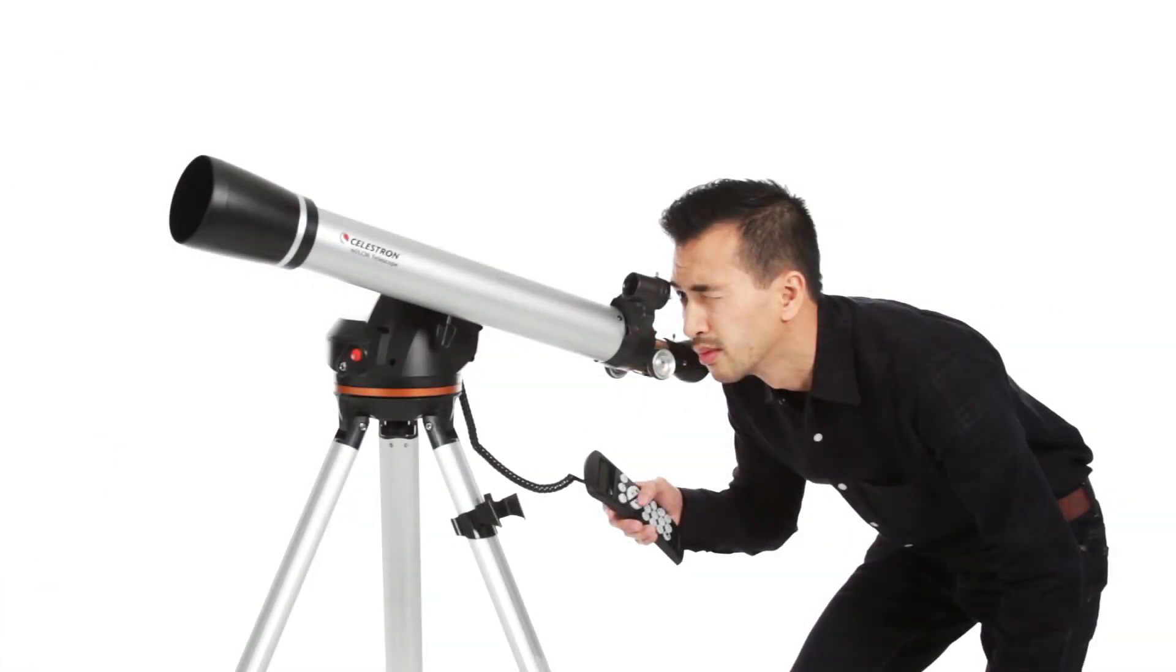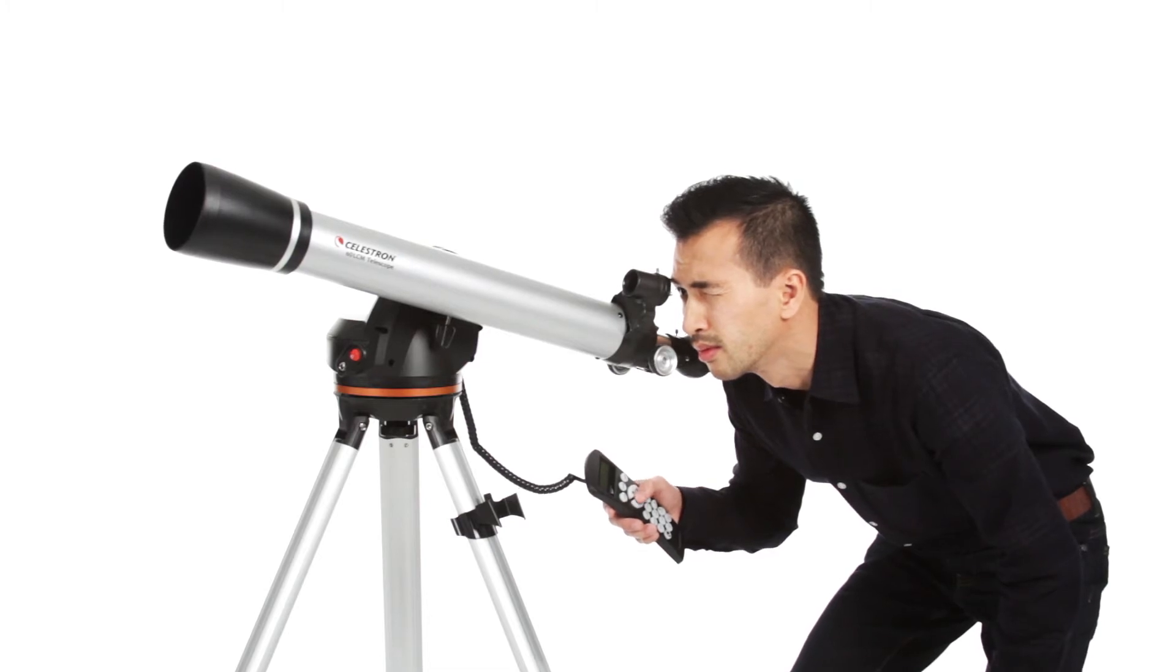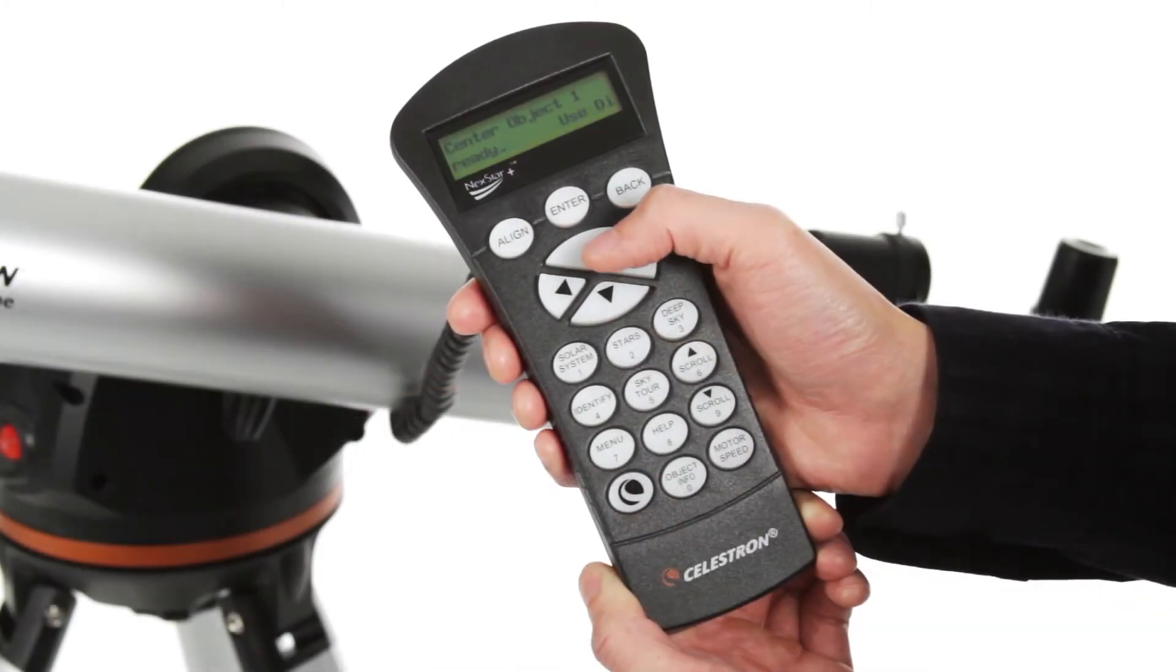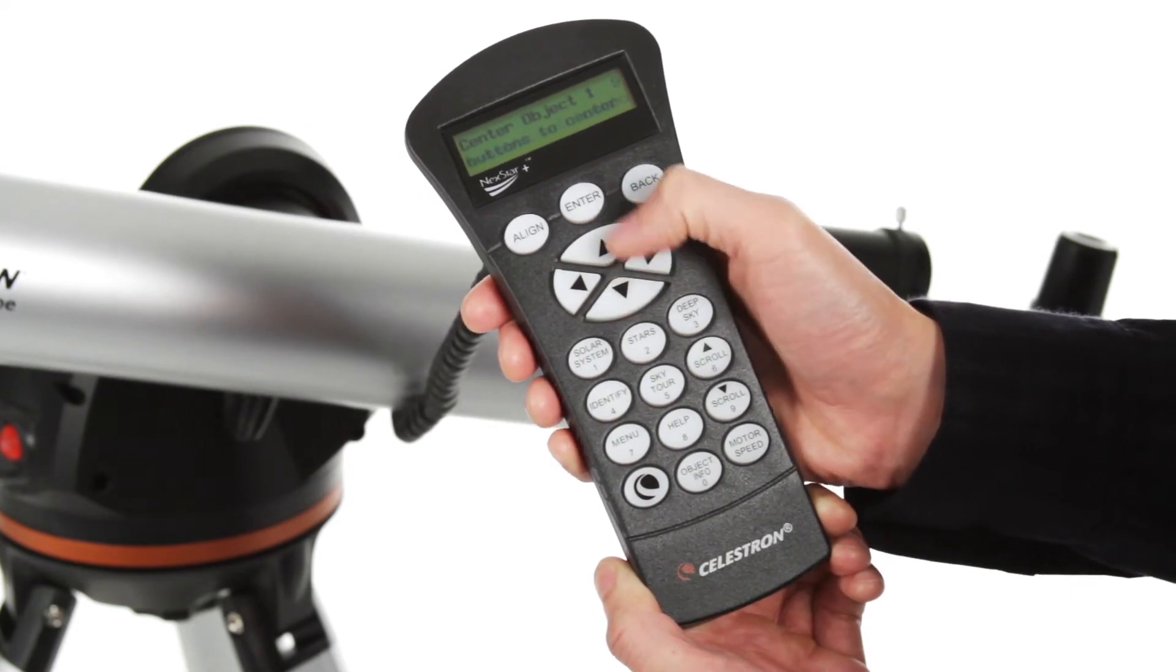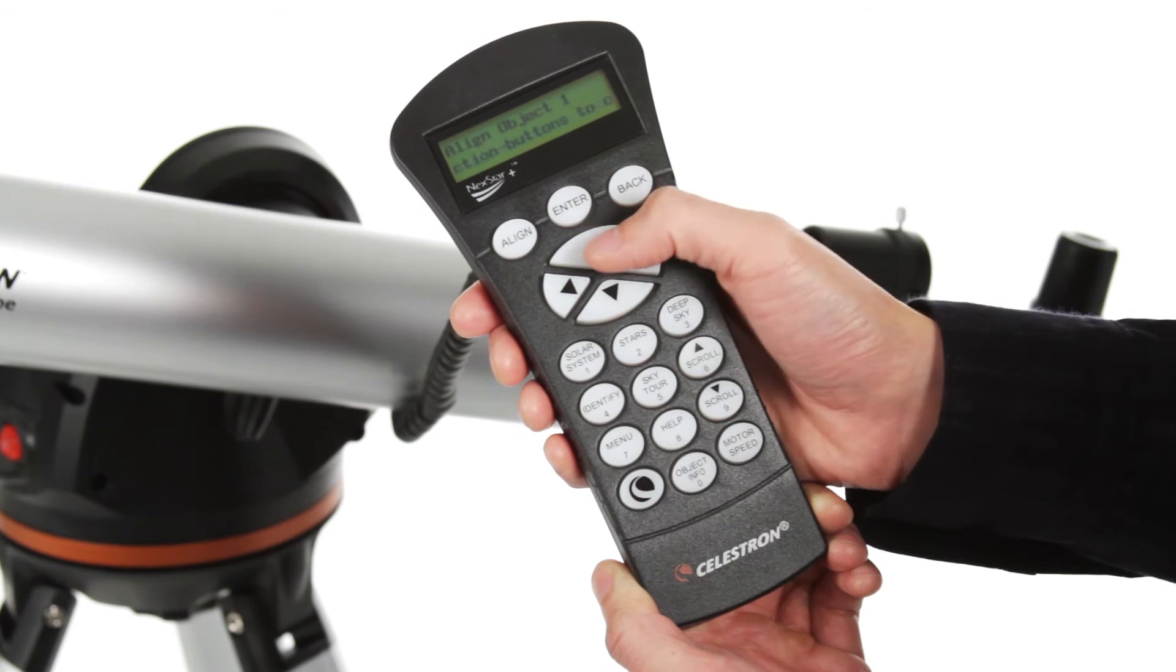Getting started is easy thanks to our proprietary skyline procedure. Use the directional buttons to center any three celestial objects in the eyepiece, and your LCM is aligned and ready to locate and identify objects for you.